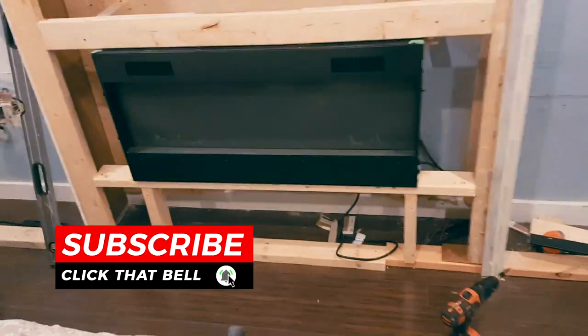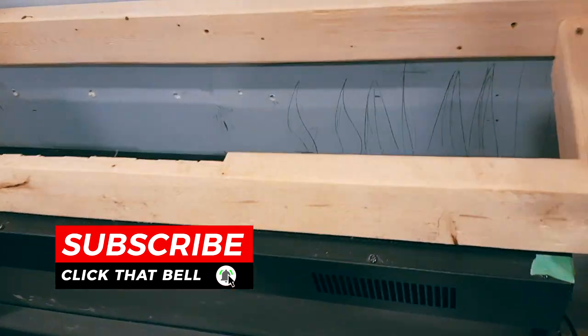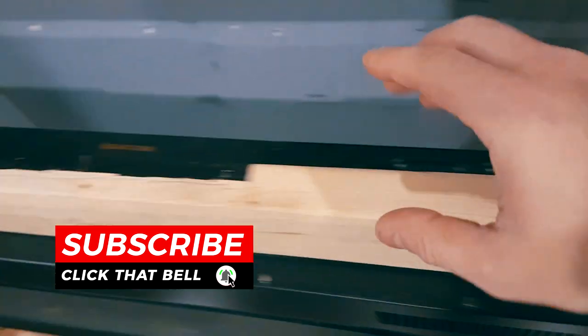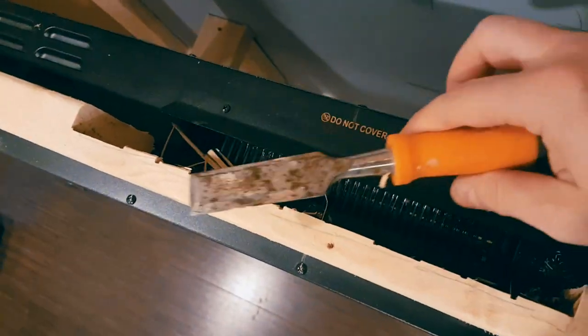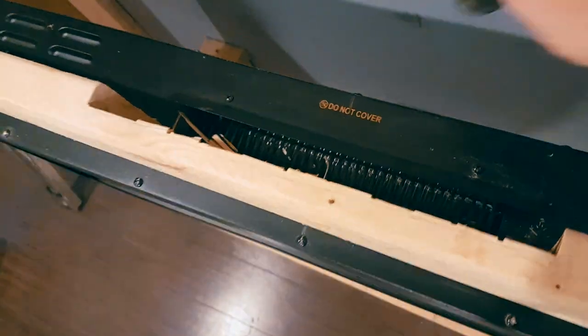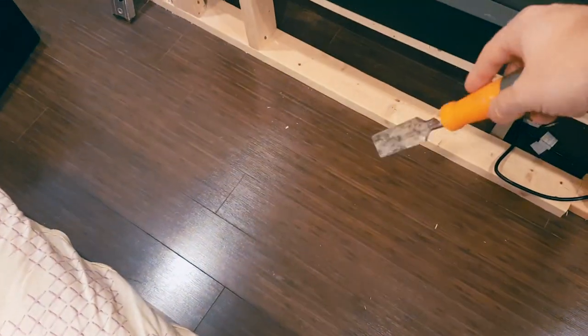Alright so at this point we have built the entire frame, support, we have notched. Now I'm going to clean this up with aluminum tape, we're going to apply the vent over top of this and then we're going to feed the pipe underneath here and then we're going to vent it out here.